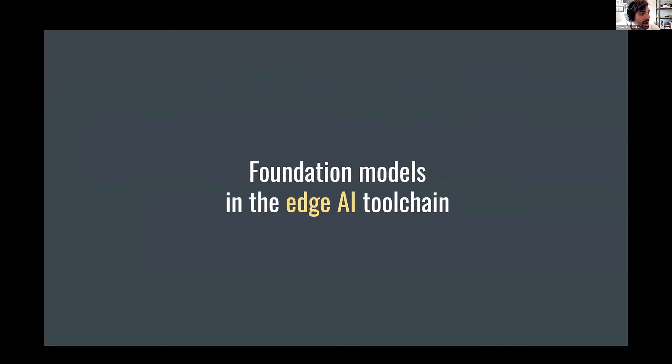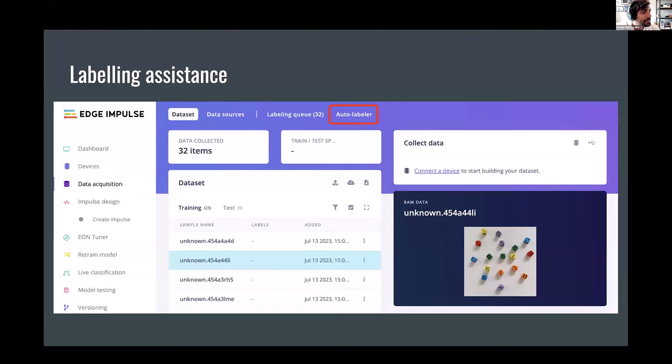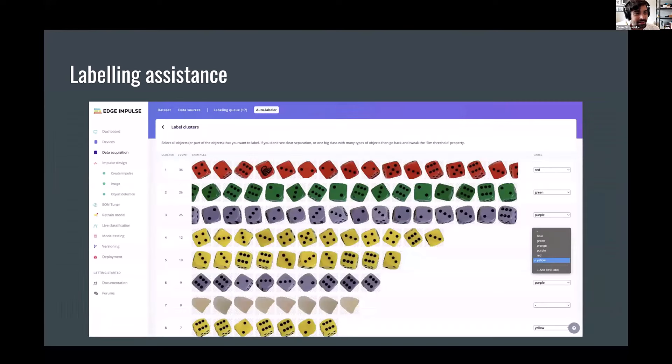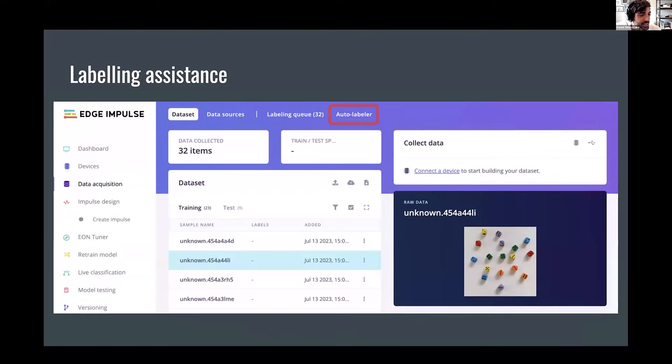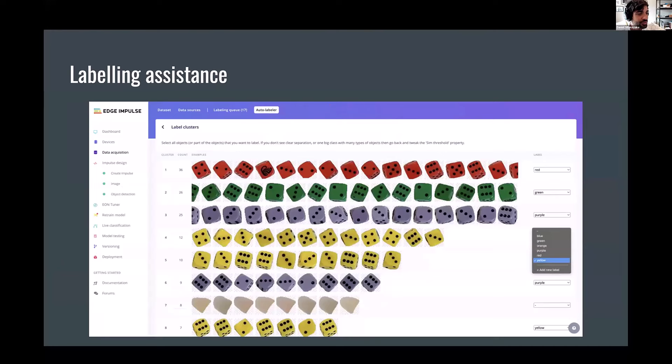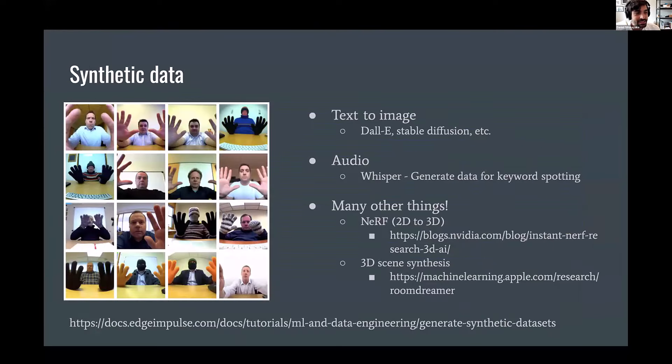So those are my steps. I'd like to talk very quickly about how these things fit into the edge AI tool chain today, because there are ways that we can use these things earlier in the workflow, rather than just trying to smash them all onto tiny devices. So one is for labeling assistance. So we have this in our product Edge Impulse, we have an auto-labeler based on this model called Segment Anything Model from Meta. And so if you see the input image here, it's pulling out all of the things that look like they are discrete objects, and then you can easily label them. That's a foundation model used for that. It works generically on any type of object, and it massively speeds up labeling.